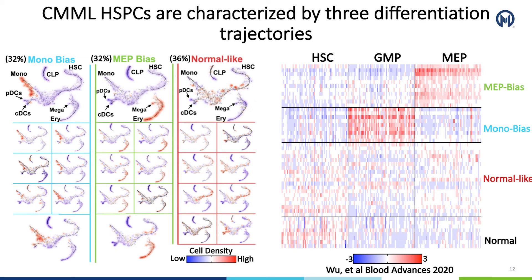32% of patients showed a prominent monocytic bias, another 32% showed a MEP bias, while 36% of patients showed a bias similar to that of normal cells.